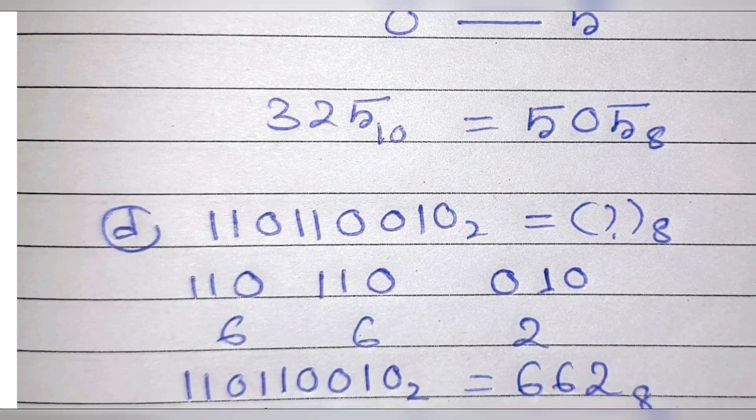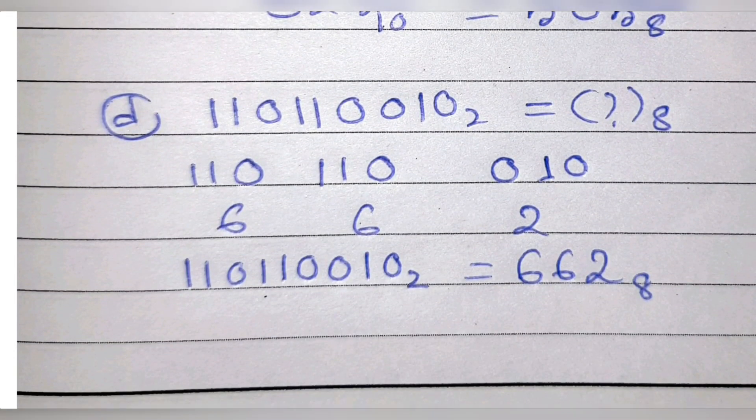Number D, we have to convert this binary number into octal. When we directly convert a binary number to octal, from right hand side we divide the number in groups of three digits. After that we write the decimal equivalent of that particular number. Here 010 means 2 and 110 means 6, so the correct answer is 662.